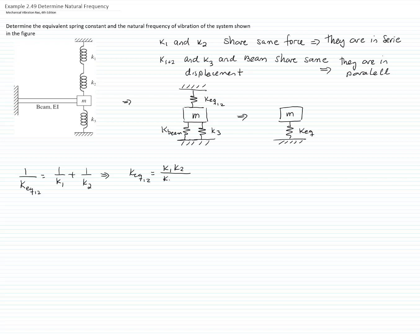The equivalent constant for a cantilever beam will be 3 times E times I, E being the Young's modulus, I being the area moment of inertia of the transversal area divided by the length of the beam cubed.